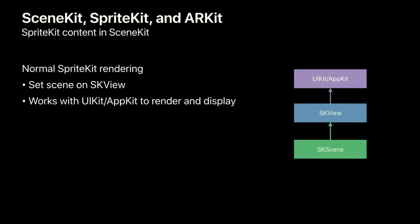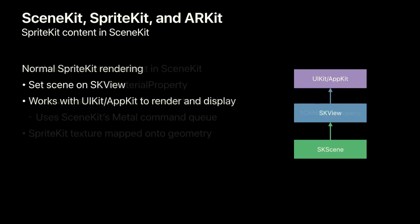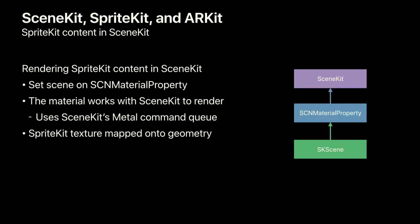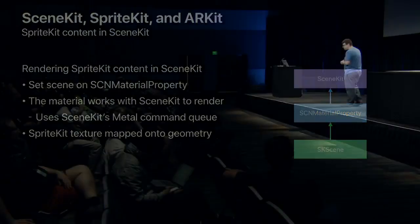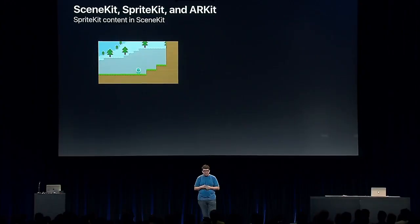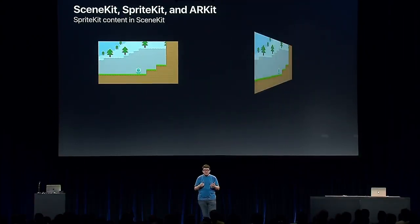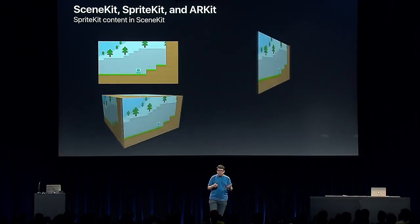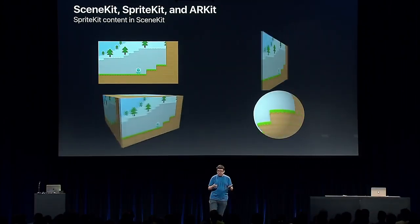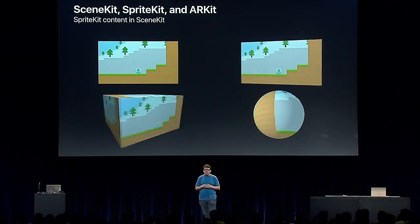To get your SpriteKit content rendering within a SceneKit scene: normally with SpriteKit you set your scene on an SKView, which works with UIKit or AppKit to get content on screen. To get content rendering in SceneKit, instead of setting your scene on the view, you set it on the material property of the geometry on which you want it to appear. SceneKit renders the SpriteKit scene to a texture and maps it onto the geometry. You can apply it to a plane, cube, or even a sphere, and as the SpriteKit scene updates, your texture updates along with it.